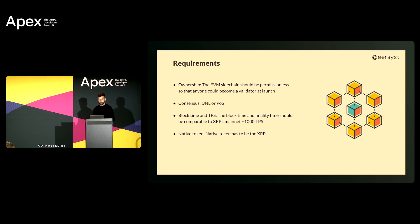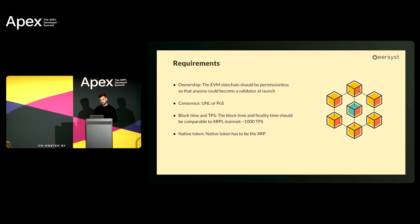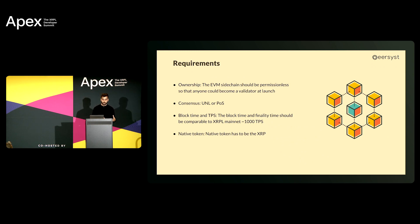In terms of ownership, we want this EVM sidechain to be permissionless, so that anyone can become a validator. We don't want it private; we want it to replicate the same model as the XRPL mainchain. In terms of consensus, we can have both UNL or proof of stake. In terms of block time and TPS, we want at least the XRPL throughput of 1K transactions, and we'd like to improve it in the future. The native token must be the same on the mainchain and the sidechain, so all users and holders with importance on the mainchain also have importance on the sidechain.